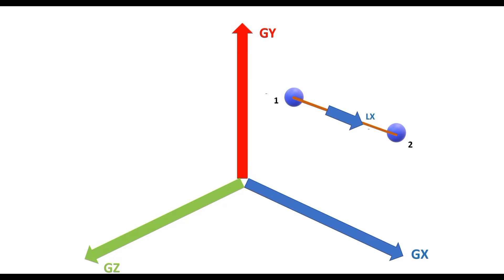In this case, the default or beta-0 configuration is defined by placing the local Y axis parallel to the global Y axis. Now that we know the positive direction of the local X axis and local Y axis, the positive direction of the local Z axis can be determined by the right-hand thumb rule. So the complete local axis system configuration in the default or beta-0 configuration has been determined for this member whose local X axis is parallel to the global X direction.